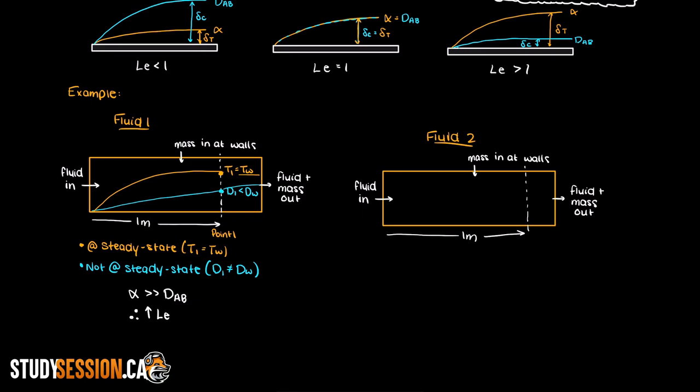So this fluid, fluid 1, transfers heat much better than it does whatever mass is being transferred. Now let's look at the other fluid. We have the opposite reaction.